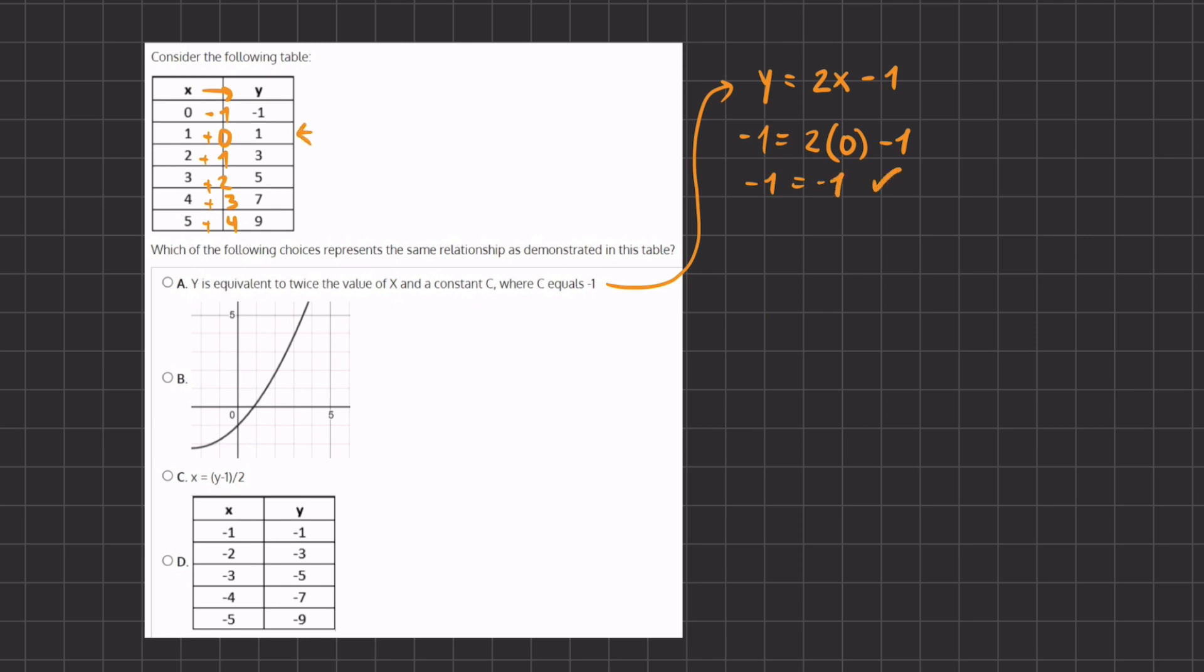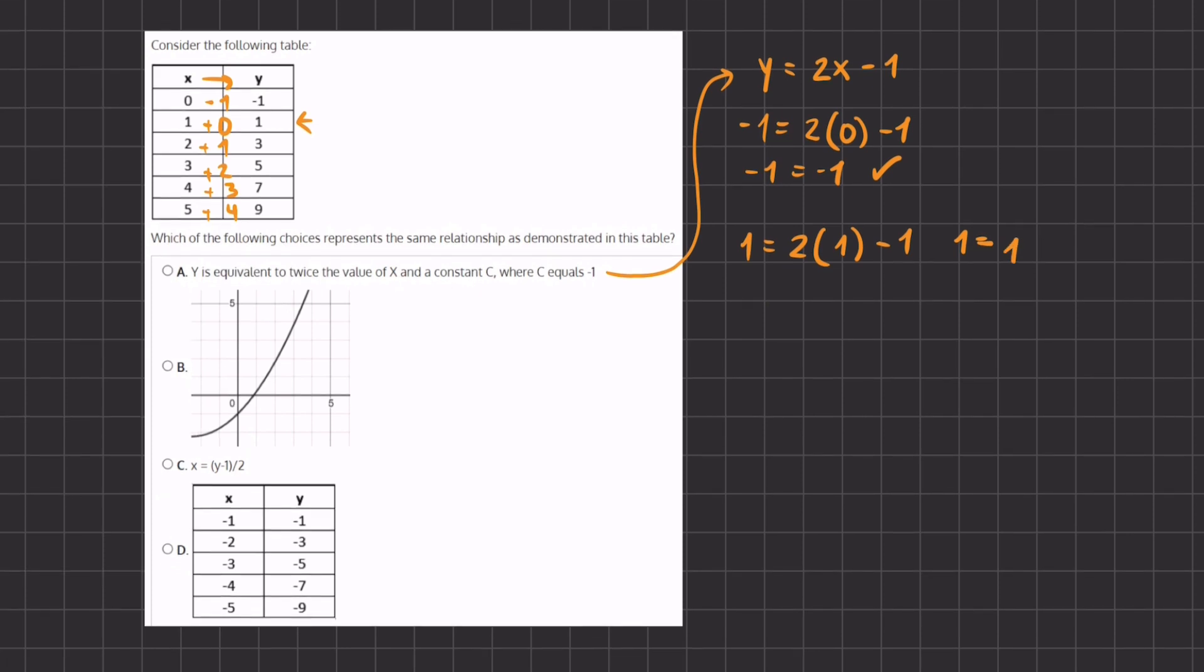Let's move on to our second point. Instead of y we're plugging in 1 equals 2 times x, and instead of x also a 1 minus 1. So here we have 1 = 2 - 1 = 1 and this is correct.